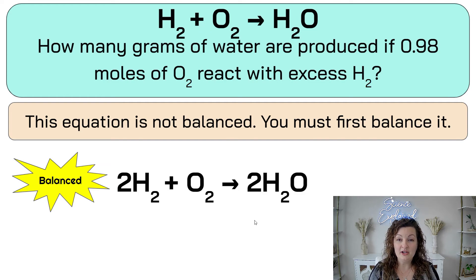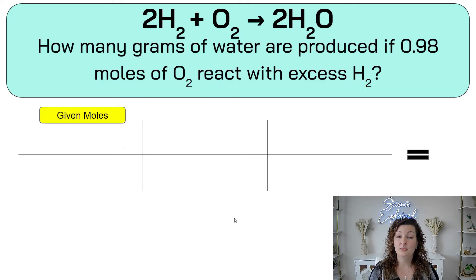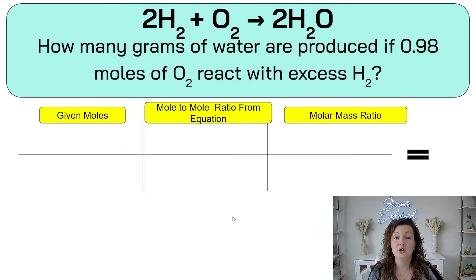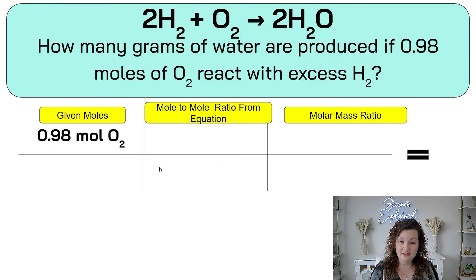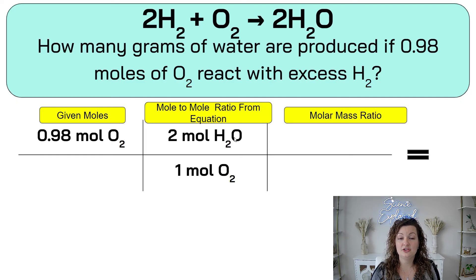So the question says, how many grams of water are produced if 0.98 moles of O2 react with an excess of H2? So we're going to start with what we know, our given moles. We're going to transfer it to mole-to-mole ratio, and then we're going to do our molar mass ratio, and then we'll be good to go. So 0.98 moles of O2 is what we start with. Diagonal down has to be moles of O2 from our equation, and we don't have anything written in front, which means it's an understood one. Now what do we want to turn this into? Grams of water. Water is H2O, so we have two of these here. So that's going to be two moles of H2O.